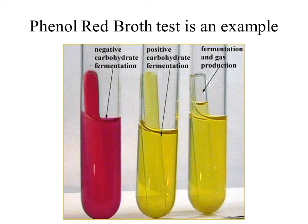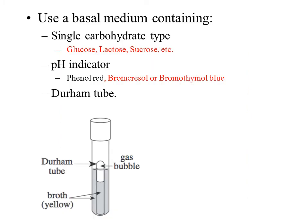We will utilize phenol red, which is a pH indicator, along with a sugar or carbohydrate. The basal medium of this phenol red broth test contains a single carbohydrate type. This carbohydrate can be glucose, a disaccharide like lactose, or a disaccharide like sucrose — any sugar source will work. We also have the pH indicator phenol red inside the broth, and the Durham tube, which will capture gas and can float as it does so.